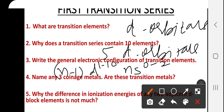Name any three coinage metals. Are these transition metals? Coinage metals are copper, silver, and gold. Yes, all three of these are transition metals.